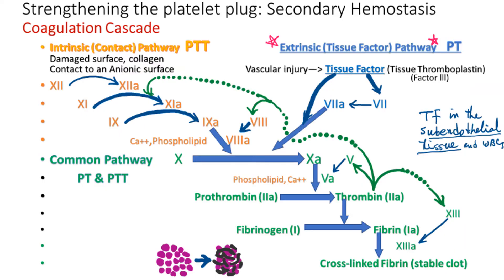Secondary hemostasis is the process to strengthen the fragile platelet plug formed in primary hemostasis. It involves a coagulation cascade where coagulation factors 1 through 13 are involved to make fibrin strands — there are 12 total coagulation factors because there is no factor 6. The coagulation cascade has three pathways: extrinsic, intrinsic, and common. This categorization is useful for correlating laboratory test results with clinical diagnoses of clotting or bleeding disorders.